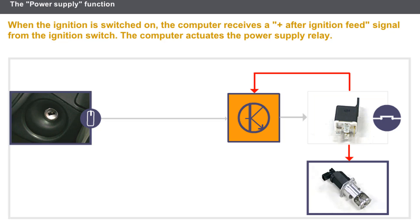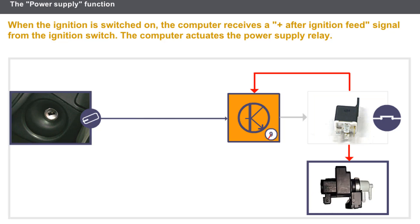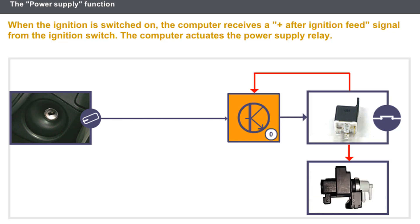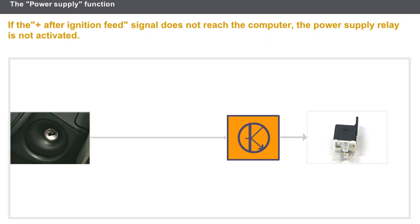When the ignition is switched off, the computer deactivates the relay after a certain delay. There is no defect mode program for the power supply function. If the positive after ignition feed signal does not reach the computer, the power supply relay is not activated.